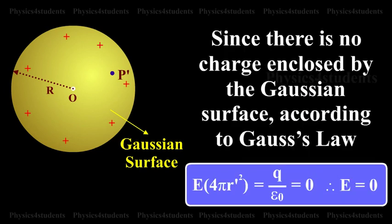Since there is no charge enclosed by the Gaussian surface, according to Gauss's law, E times 4πr'² equals q by ε₀ equals 0. Therefore, E equals 0.